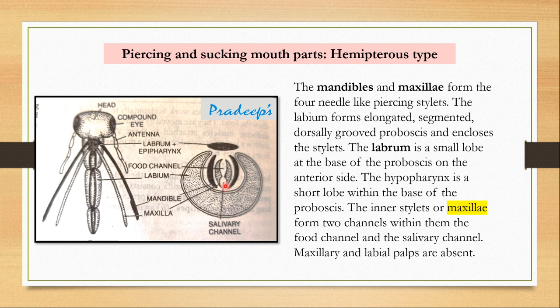The salivary channel is used to pass saliva to the site from where plant sap is sucked. The food channel is used to draw liquid from that part. The two maxillae are surrounded by the mandibles, whose function is to pierce through the skin of the plant. The labium's function is to surround all the stylets and keep them protected.